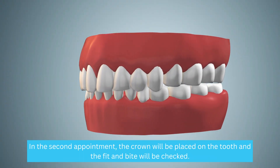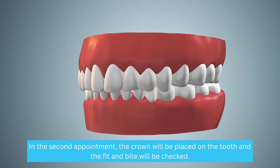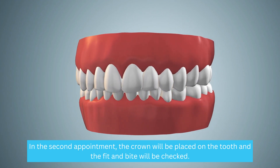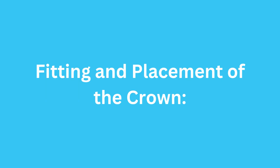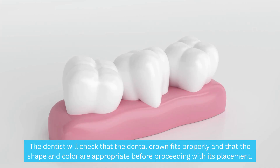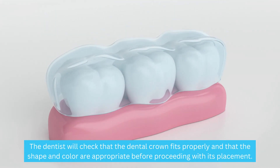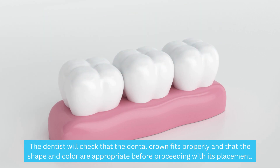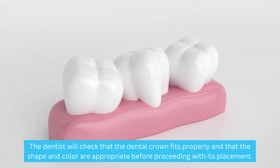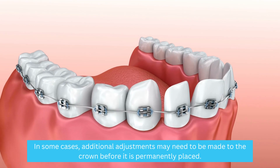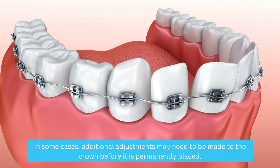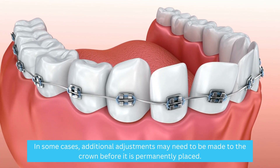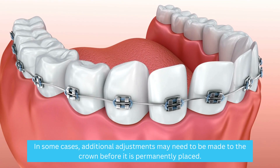In the second appointment, the crown will be placed on the tooth and the fit and bite will be checked. The dentist will check that the dental crown fits properly and that the shape and color are appropriate before proceeding with its placement. In some cases, additional adjustments may need to be made to the crown before it is permanently placed.